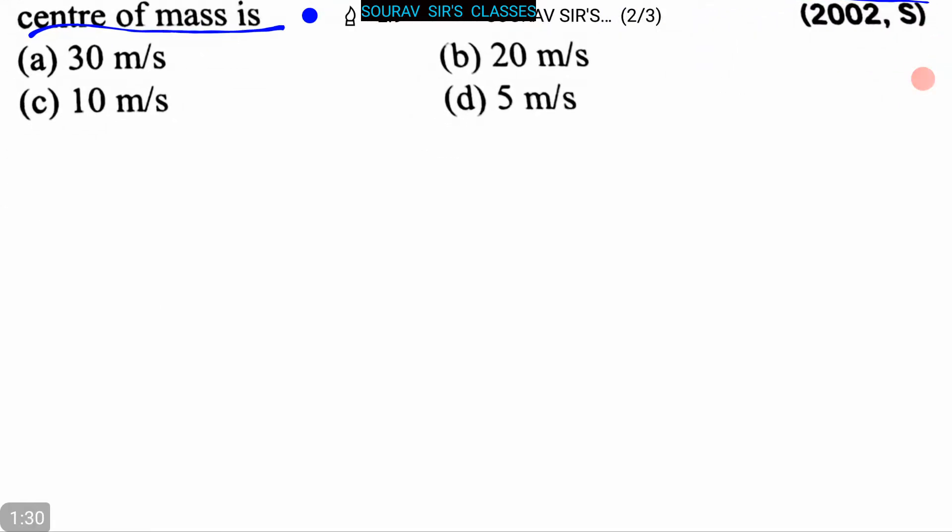We can write that velocity of center of mass, Vcm, is equal to m1v1 plus m2v2 divided by m1 plus m2.